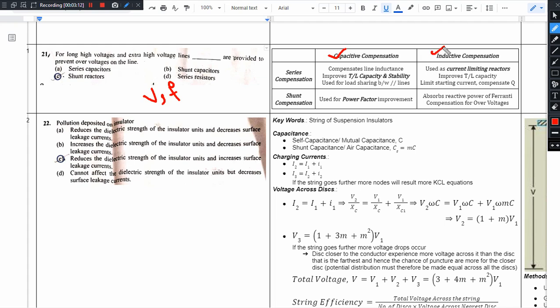In this compensation, we have capacitive compensation and inductive compensation. These capacitors and inductors we can place in series or we can place in shunt or parallel. In some cases we place them in series, in some cases we place them in parallel. First, capacitors. When do we place capacitors in series? To improve transmission line stability and transmission line capacity, we place capacitors in series for stability.